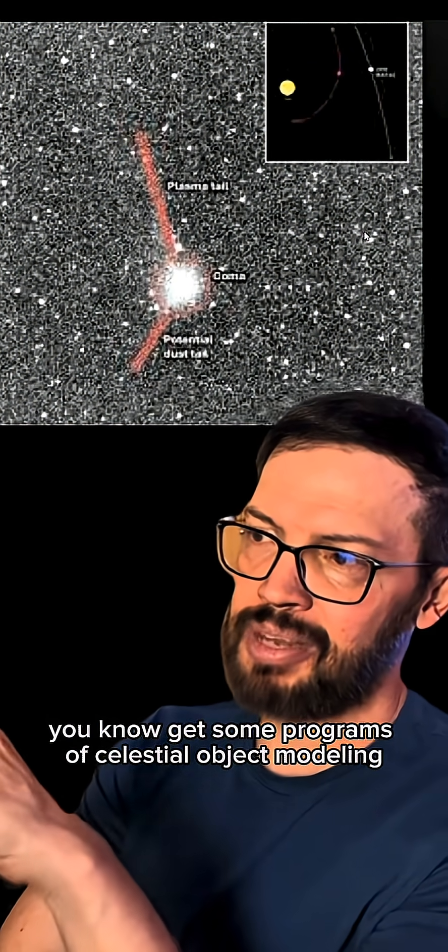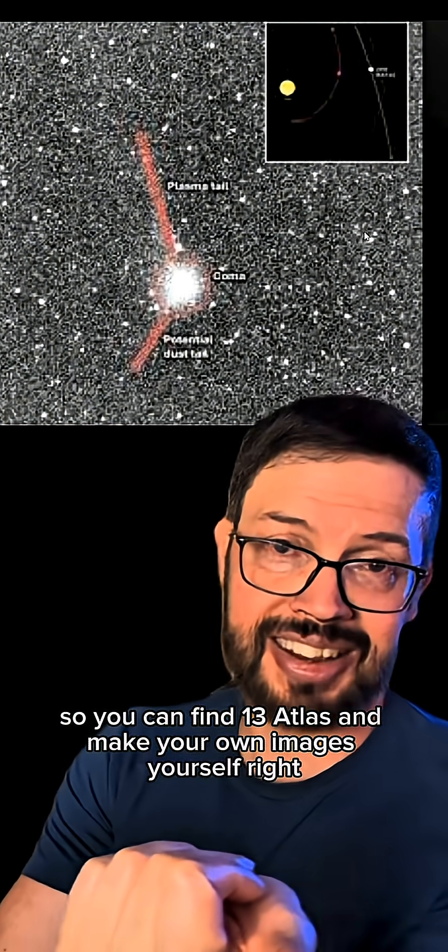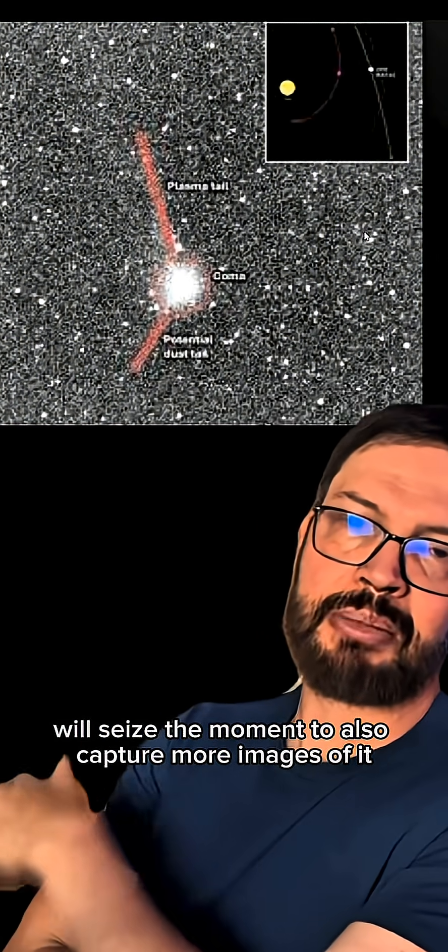So if you have a telescope, get some programs of celestial object monitoring so you can find 13 Atlas and make your own images yourself. And during the approach period, telescopes here on Earth and in space will seize the moment to also capture more images of it.